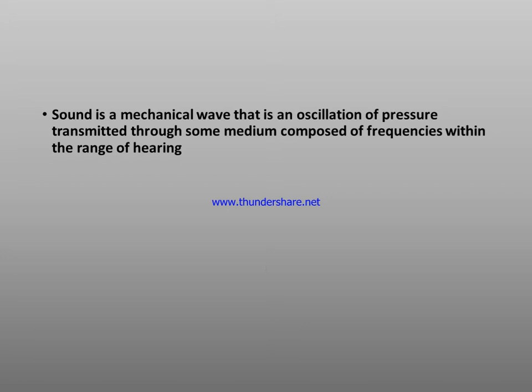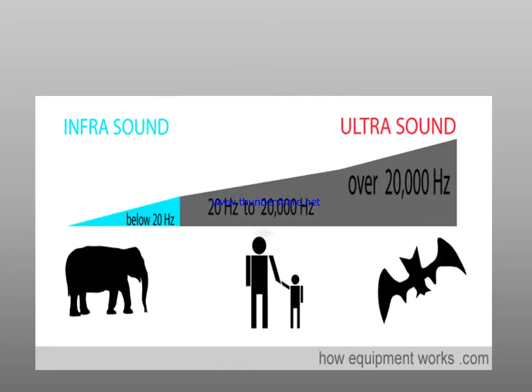Firstly, sound is a mechanical wave that is an oscillation of pressure transmitted through some medium, composed of frequencies within a range of hearing. Types of sound are infrasonic, sonic, and ultrasonic.